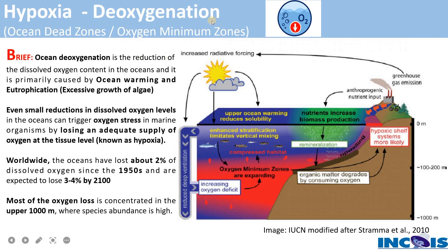Coming to another impact of climate change — hypoxia — this is deoxygenation, which is a process of reduction of dissolved oxygen content in the ocean. It is primarily caused by ocean warming and eutrophication. Eutrophication is the excess growth of algae driven by huge amounts of nutrients released from coastal sources, which leads to excess biomass production and combined with ocean warming, causes a reduction in dissolved oxygen content — what we call ocean deoxygenation.